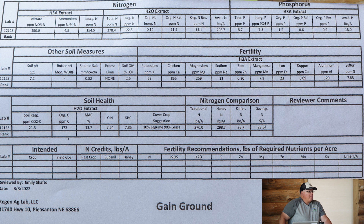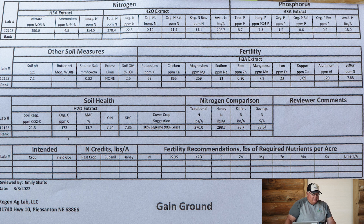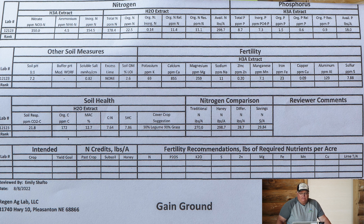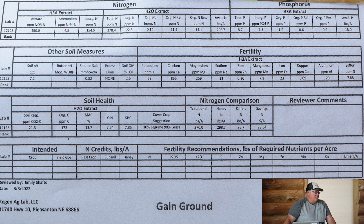On sampling: the Haney test prefers zero to six inch depth — you can see that in the upper right of the report. Depending on field size and soil type variations, we sample different soil types but use a composite sample. Going out into a quarter with two different soil types, we'll take the major soil types and pull 20 to 40 cores for each sample, mix them together, send it in. You simply need a quart-size bag or less.